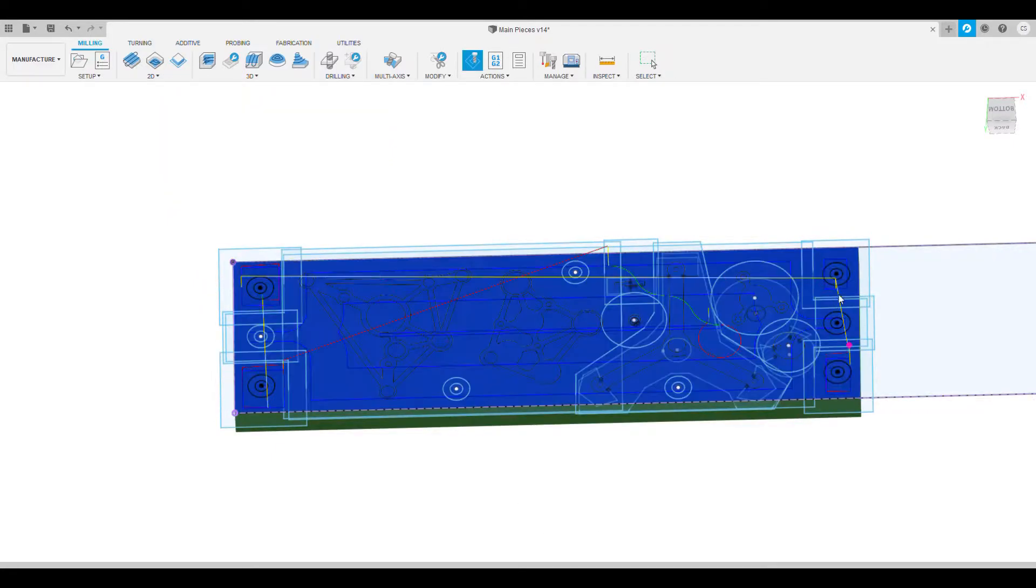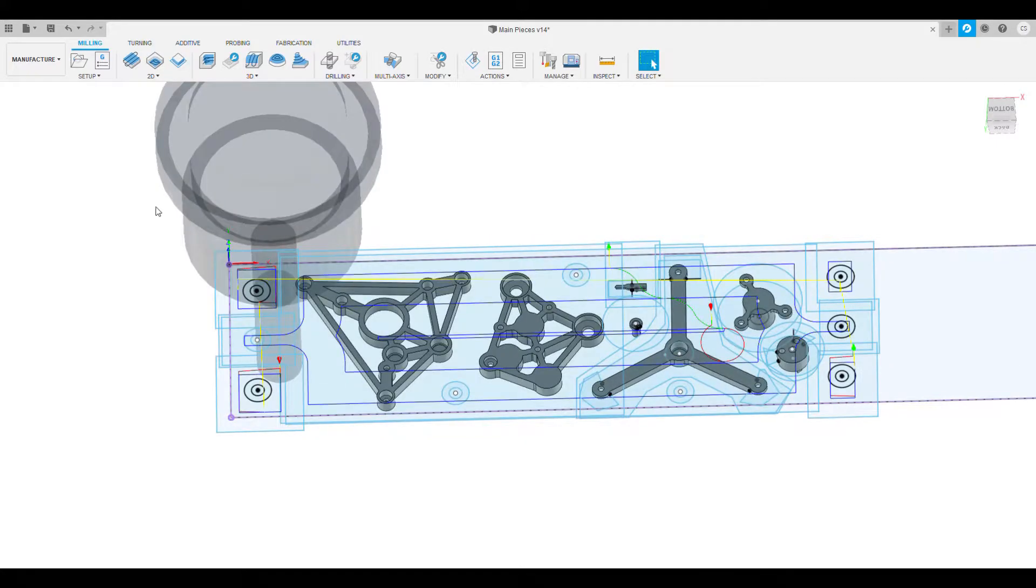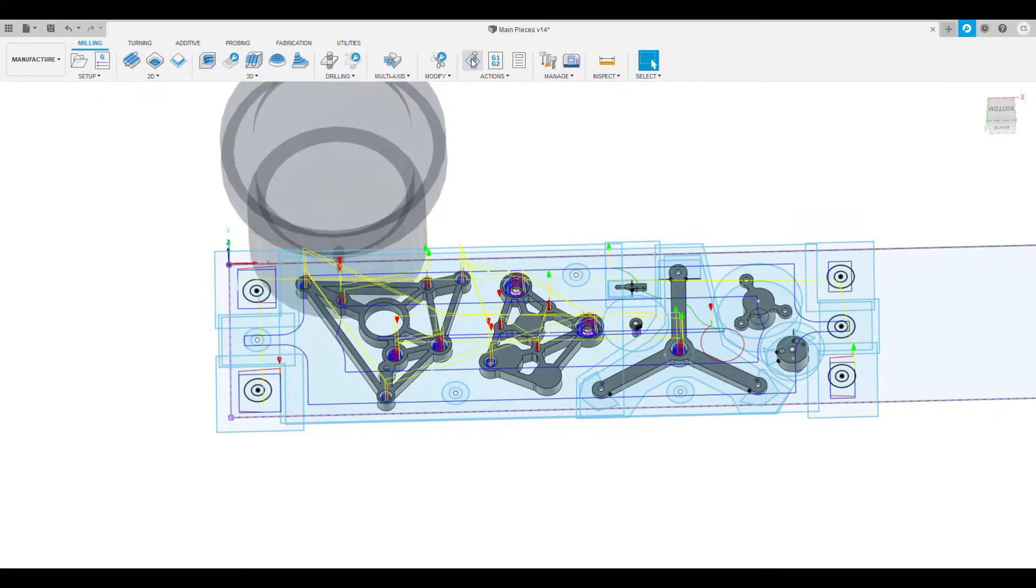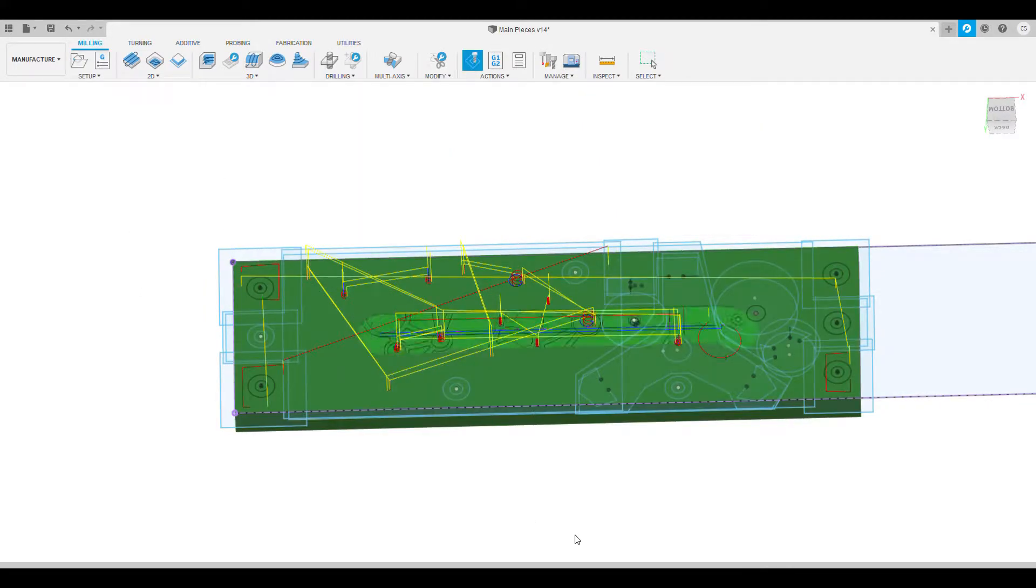Now we'll secure the workpiece with just those two screws in the center. Then we'll run again but this time the four corners are taken out. Now the backside is completely flat.